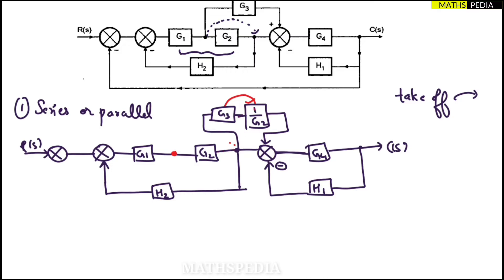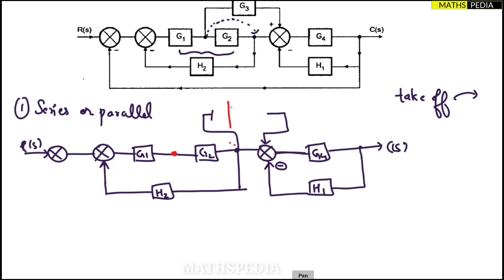So G3 and G2 are in series now. Whenever a series combination appears, you can directly multiply them. So G3 multiplied by 1/G2 — I hope you understood.